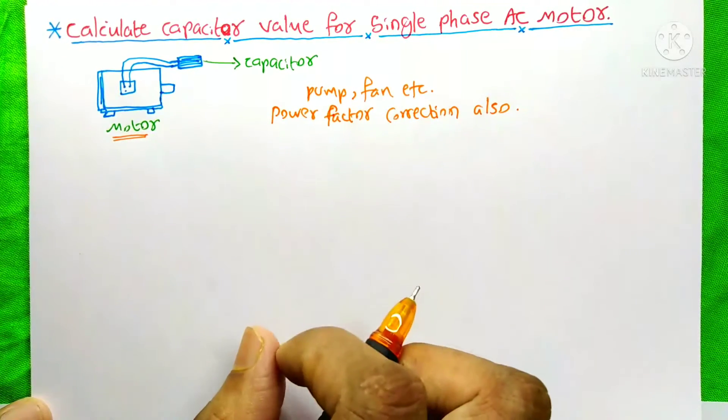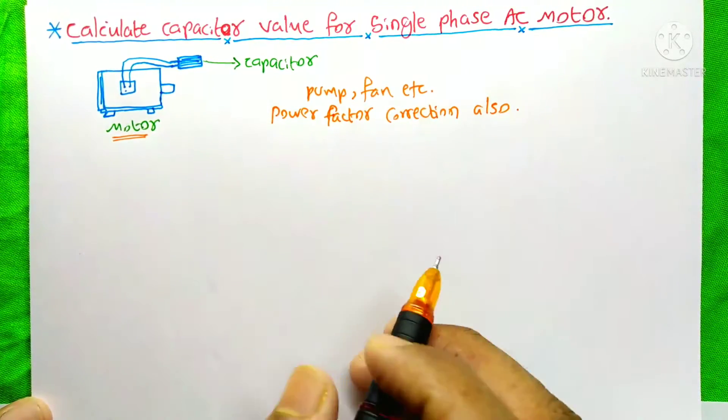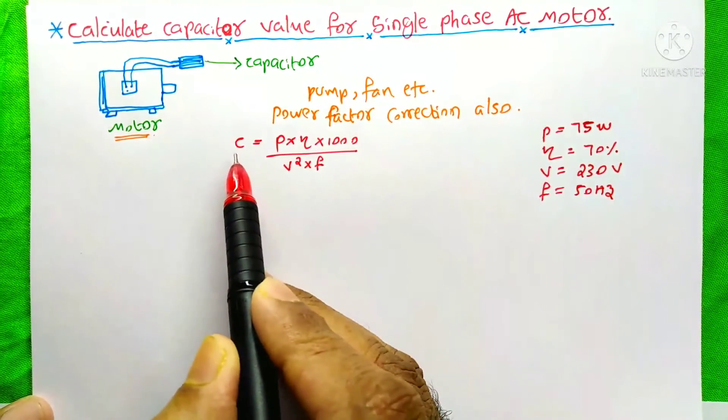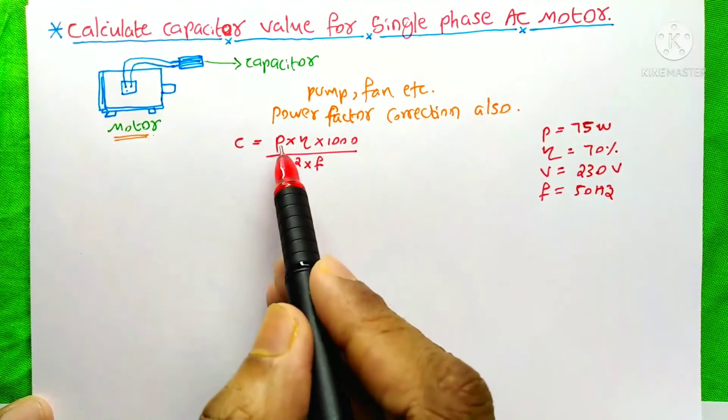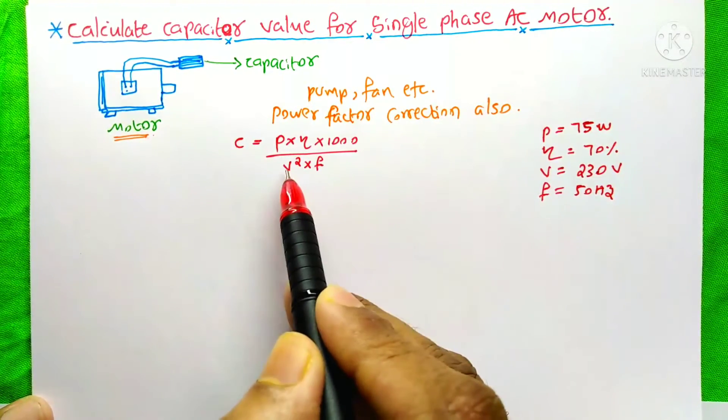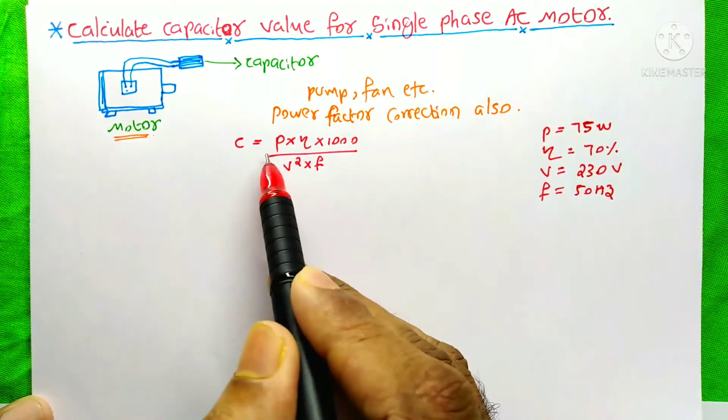To learn this, please don't skip this video. For calculating the capacitor value, the equation is: C = P × efficiency × 1000 / (V² × frequency), where V is voltage and P is power.